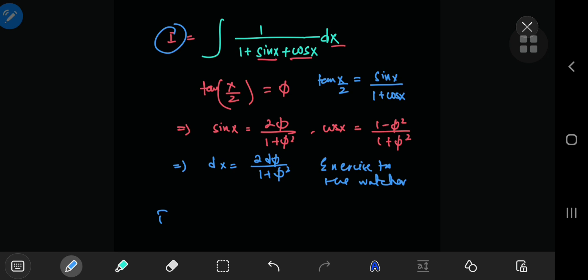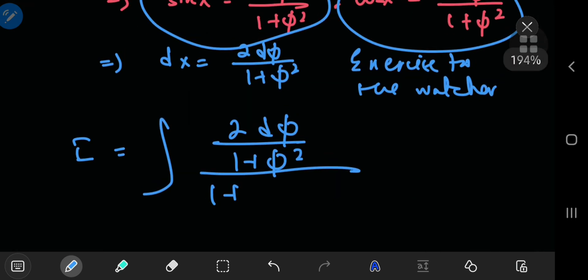You're now integrating, instead of the dx, you now have 2 times d phi divided by 1 plus phi squared. And down here you have 1 plus the sines and the sine and the cosine of x, so this is the sine of x and this is the cosine of x.